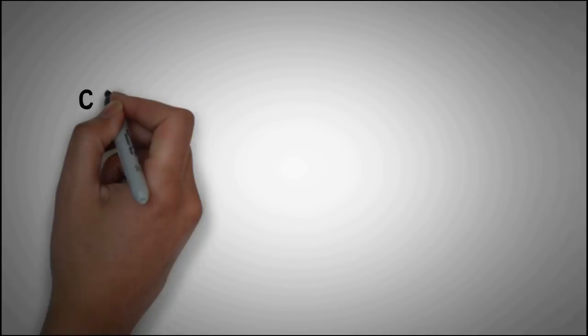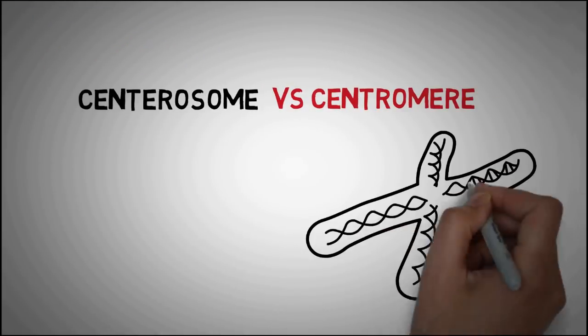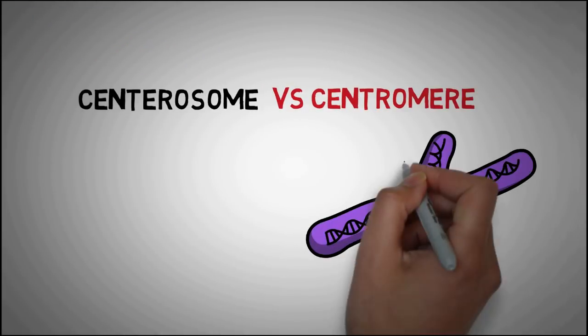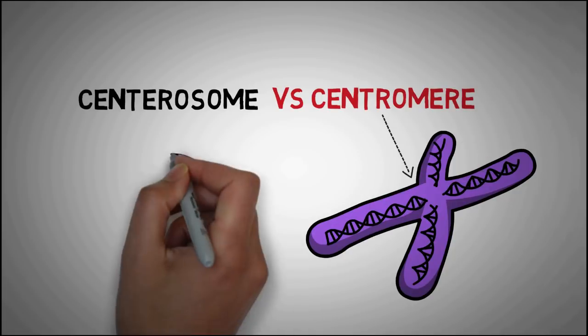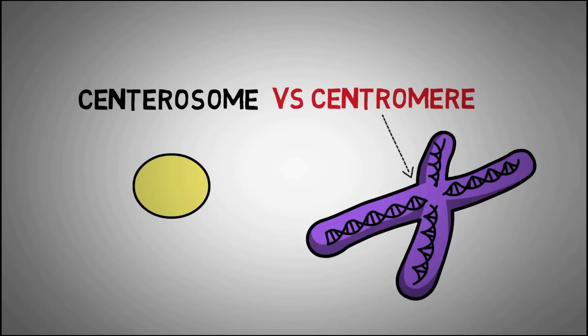The word centrosome is often confused with the word centromere. This is a centromere, the part that you see in the center of a chromosome which is different from centrosome which is the structure here which helps in dividing the contents of nucleus into two.